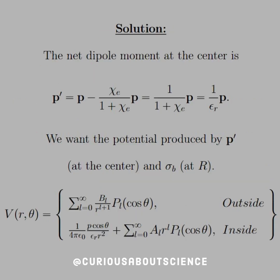Alright, so to first tackle this question, let's consider the net dipole moment at the center of the sphere. P prime is equal to P minus chi E over 1 plus chi E P. And then that whittles down to 1 over epsilon R P.